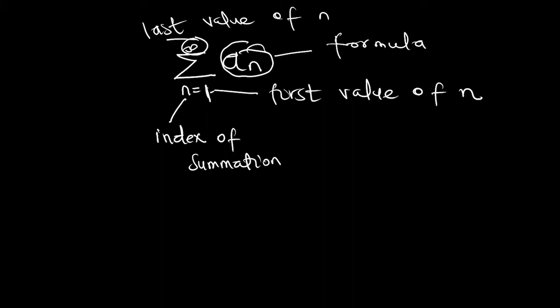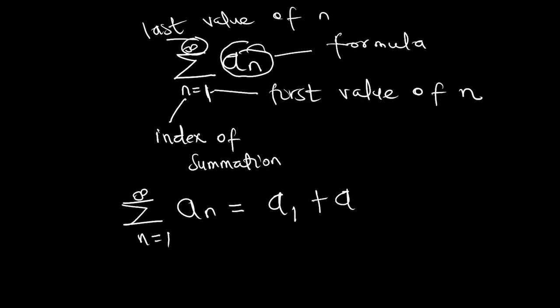So if I want to expand this summation from n to infinity, what you are going to do is substitute from 1, 2, 3 up to infinity, then add wherever we see n. So starting from here, it is going to be A sub 1, then A sub 2, plus A sub 3, up to the infinite term.